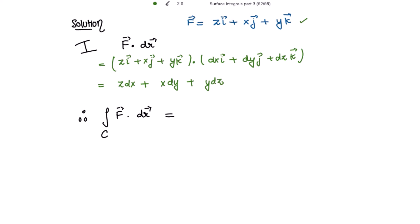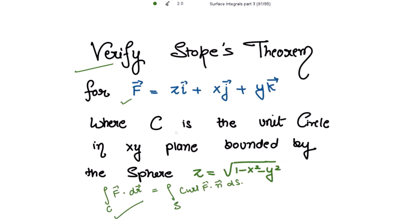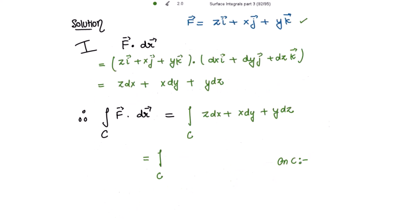Now taking the line integral on this dot product. This is equal to the line integral over C. Now on C, because C is the unit circle in the xy plane, z is equal to 0, and therefore dz is also 0. So the first term vanishes, and the third term vanishes as well, leaving only the second term.